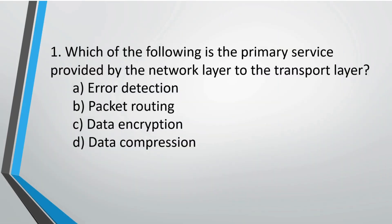First question: which of the following is the primary service provided by the network layer to the transport layer? Option A: error detection, B: packet routing, C: data encryption, D: data completion. The correct option is B, packet routing.